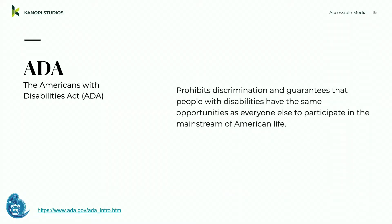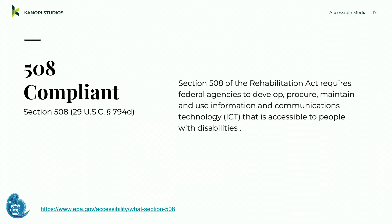The ADA — Americans with Disabilities Act — prohibits discrimination and guarantees that people with disabilities have the same opportunities to participate in mainstream American life and in state and local government programs. Section 508, which is more federal, requires federal agencies to develop, procure, maintain, and use information and communications technology that is accessible for everyone — including administrative users entering content, not just end users.